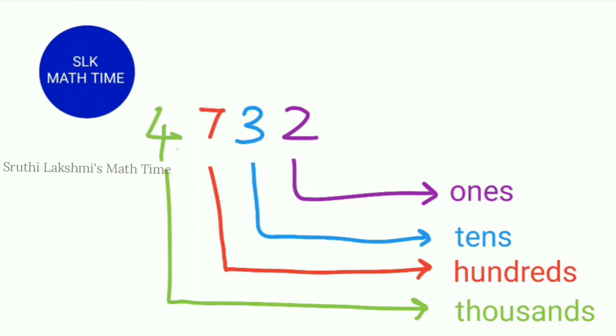Let's see this number, 4,732. Here, 2 is in the ones place, 3 is in the tens, 7 is in the hundreds, and 4 is in the thousands. So what is the abbreviation of ones, tens, hundreds, and thousands? The abbreviation for ones is O, tens is T, hundreds is H, and thousands is TH.